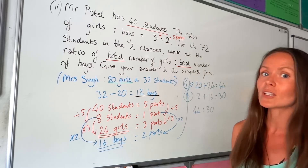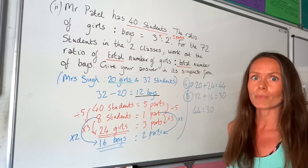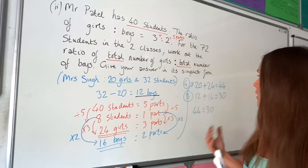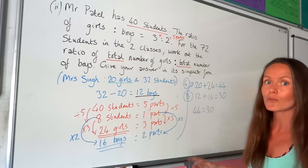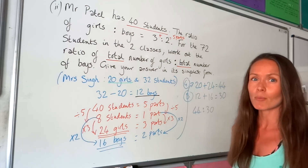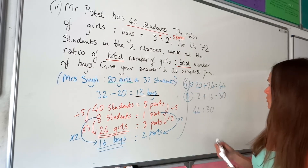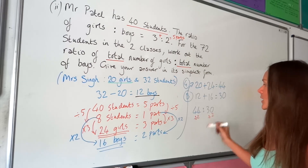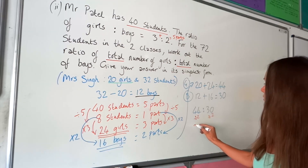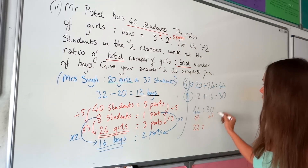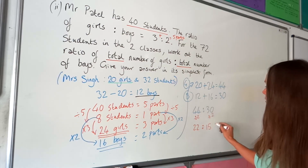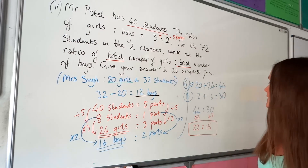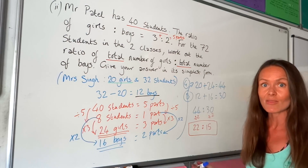Don't forget to give your answer in its simplest form. If you don't know how to simplify ratios, I have another video on that. You need to find a common factor in those two numbers — you can divide both by 2. So 44 divided by 2 gives 22, and 30 divided by 2 gives 15. So the final answer is 22 to 15. We can't simplify further because there's no common factor in those two numbers.